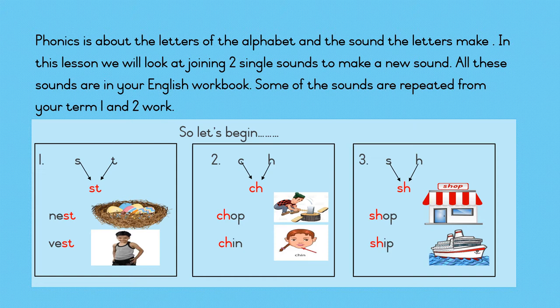Example 1. S-t-st. N-e-s-t: nest. Sentence: The eggs are in the nest. V-e-s-t: vest. The boy is wearing a vest.